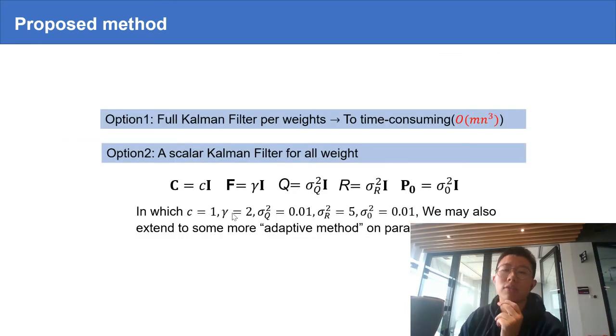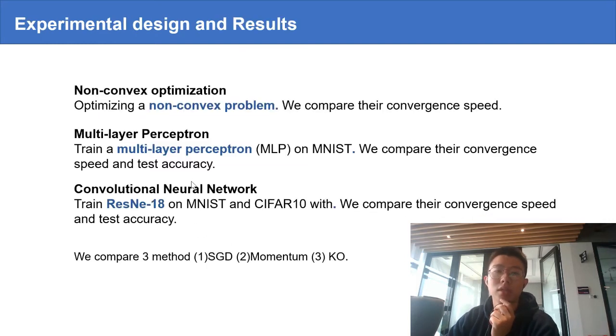Since running the full Kalman filter for each parameter is quite expensive, we adopt a scalar Kalman filter for all parameters. All the hyperparameters are predefined when we search them via grid search.